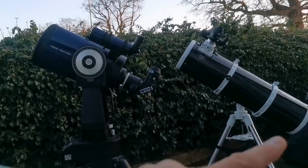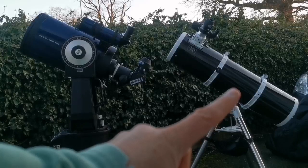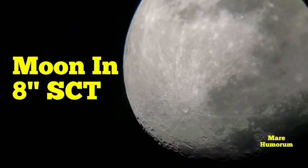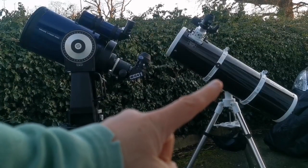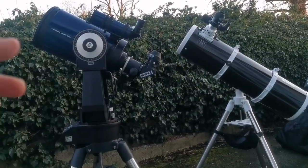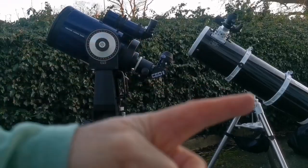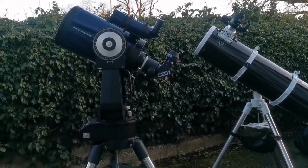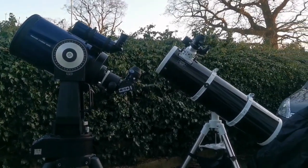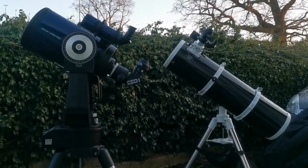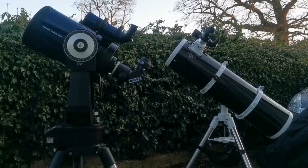Another thing that may confuse you is image orientation. As you've seen in the video, the image in one scope is reversed compared to the other. The Schmidt-Cassegrain reverses the image compared to normal viewing, and the Newtonian also flips the image through its mirror. So when looking at the moon through these two telescopes, you have to use different maps to comfortably find and identify objects and their names.